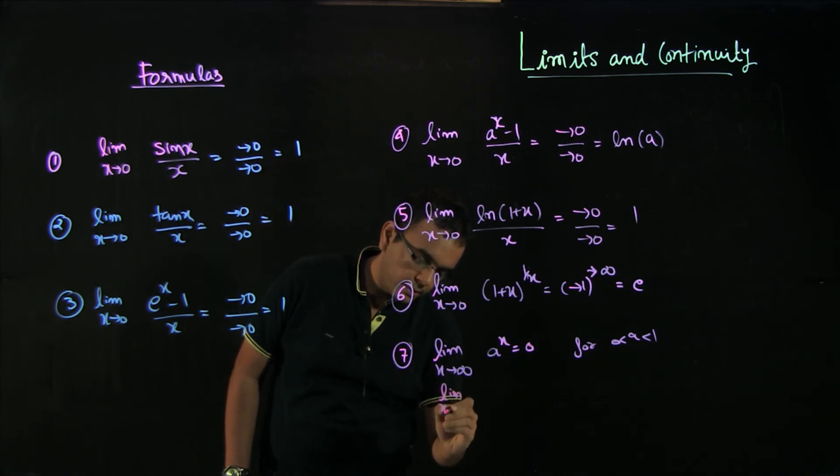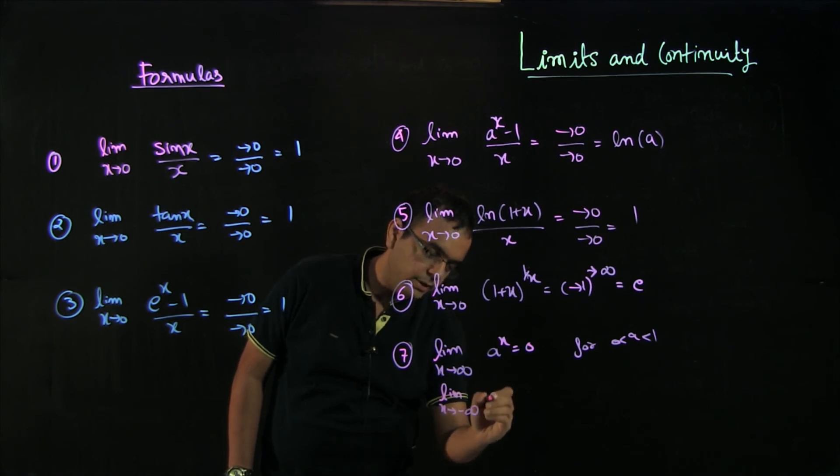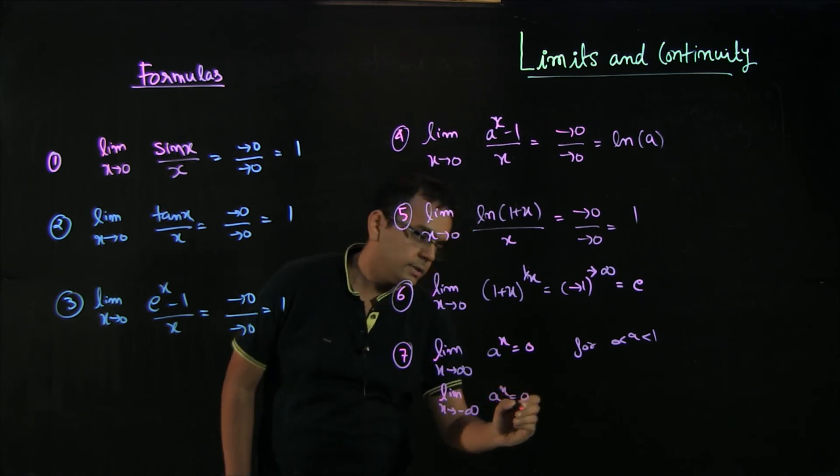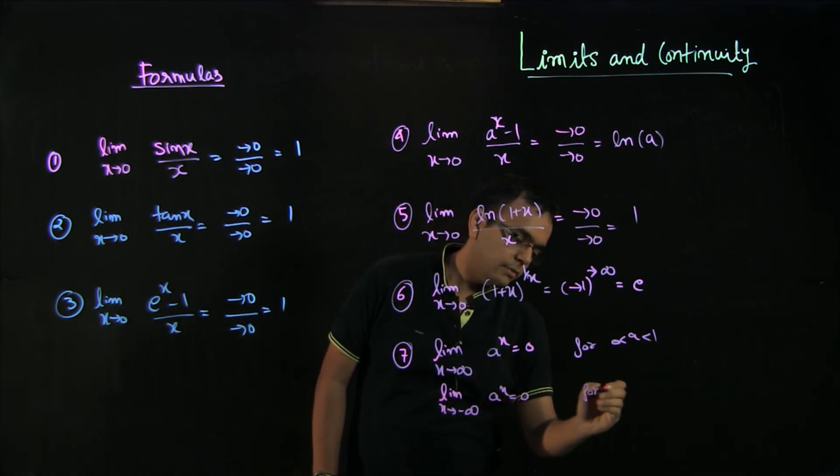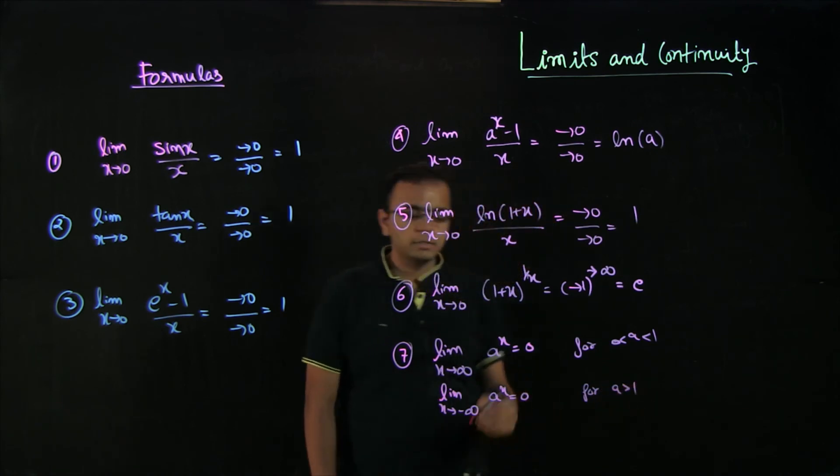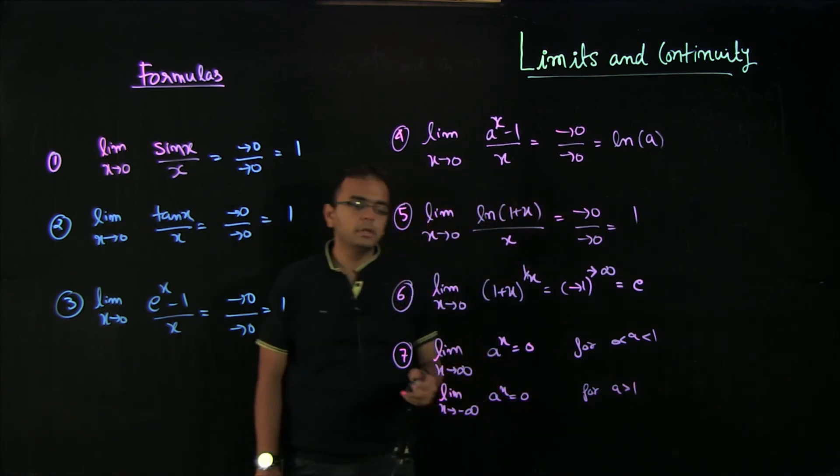Similarly, if limit x is approaching minus infinity, a raised to the power of x equals 0 for a greater than 1. If you have this, let's say 1.5, then 1.5 raised to the power of minus infinity is 0.